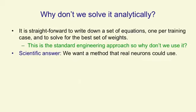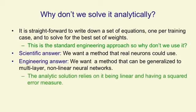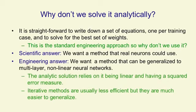The first answer, the scientific answer, is we'd like to understand what real neurons might be doing, and they're probably not solving a set of equations symbolically. An engineering answer is that we want a method that we can then generalize to multilayer nonlinear networks. The analytic solution relies on it being linear and having a squared error measure. An iterative method, which we're going to see next, is usually less efficient, but much easier to generalize to more complex systems.